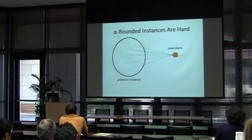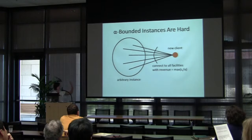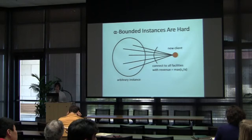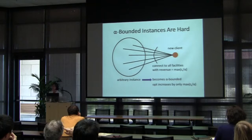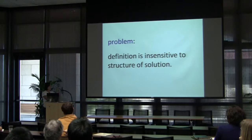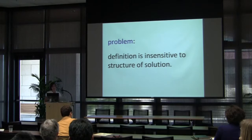The problem with alpha-boundedness defined on an instance is that it's insensitive to the structure of the solution — it's a property of the instance, not the solution. Our key insight is that we need a definition that's a property of the solution rather than the instance itself. There has been some prior work along these lines: a 2004 paper by Kleinberg, Papadimitriou, and Raghavan looking at the catalog segmentation problem, which is essentially maximum facility location with uniform opening costs.